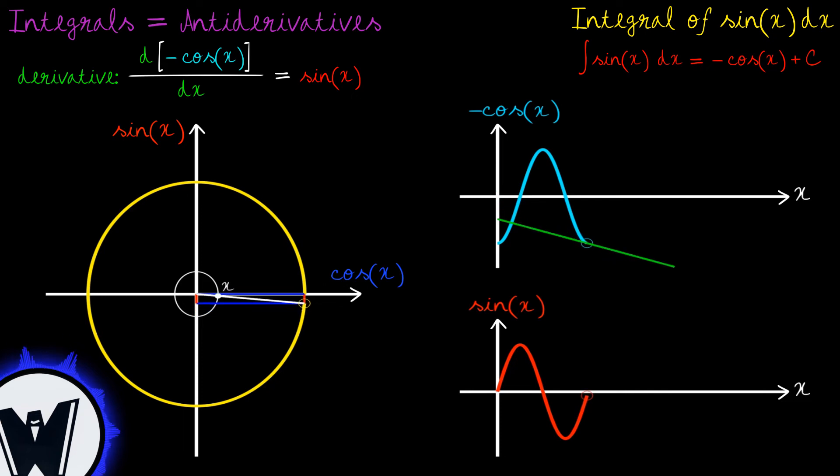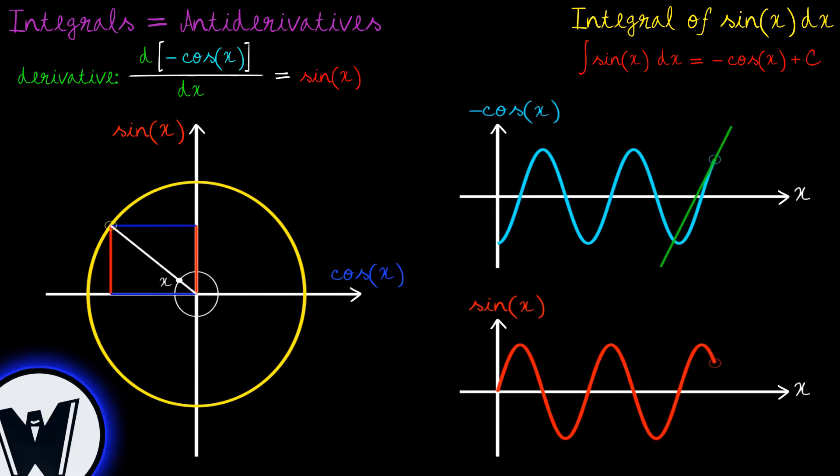Repeating this process, we can see how the slope of the green line behaves, whether it is negative, zero or positive, and associate it with the graph of sine of x that respectively becomes negative, zero or positive.